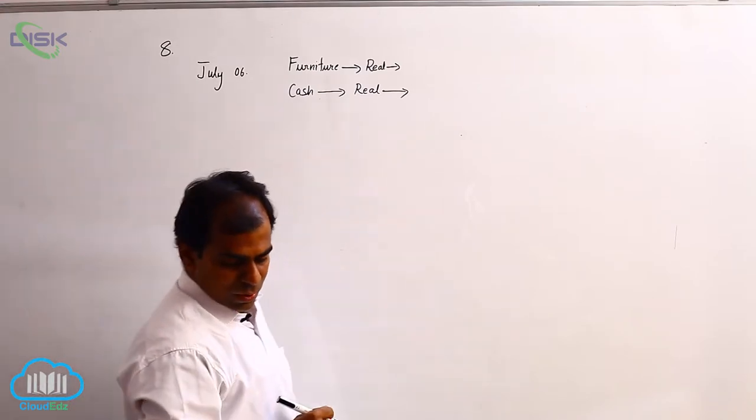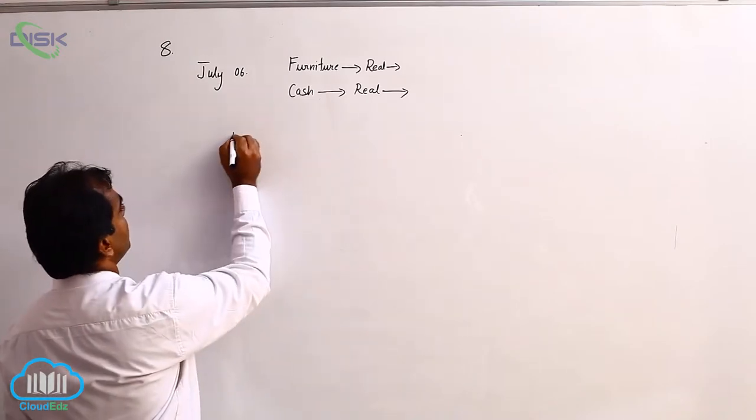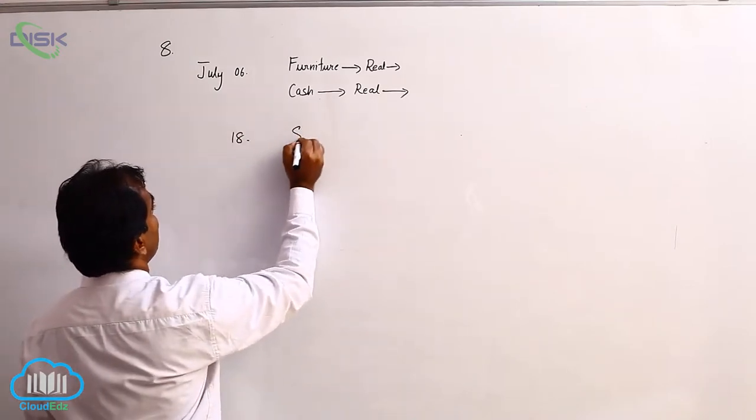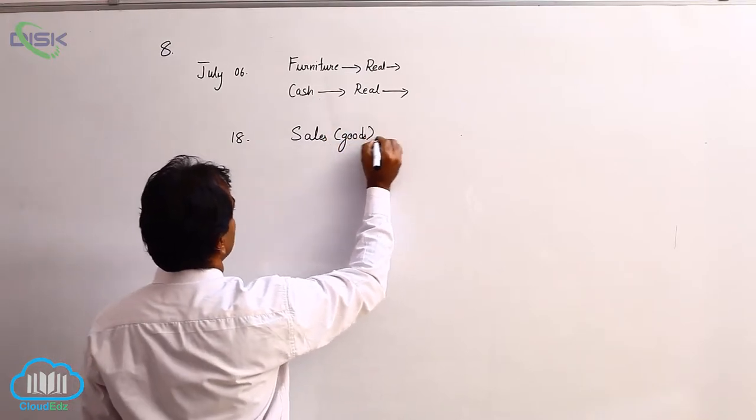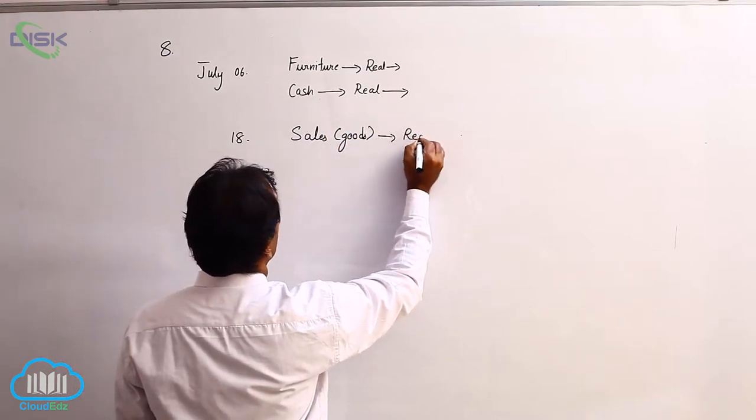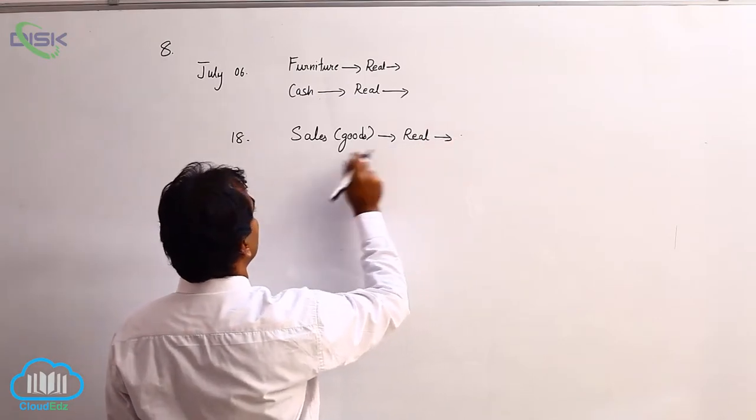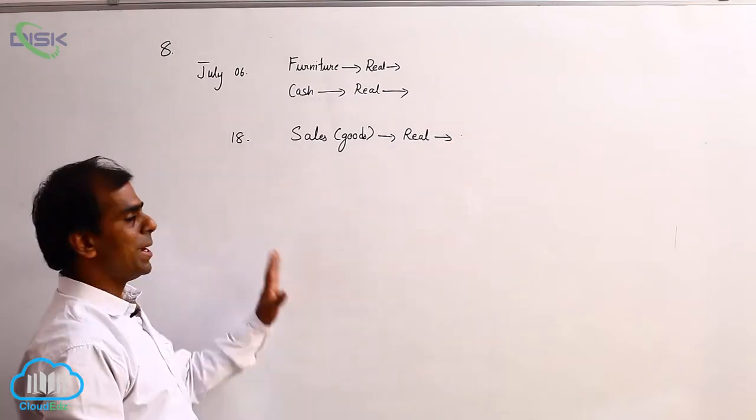Next, sold goods to Sudip on 18th July. You have sale of goods. So sales, which is nothing but representing goods, real account. So goods, you see they are going out or coming in and apply the rule.